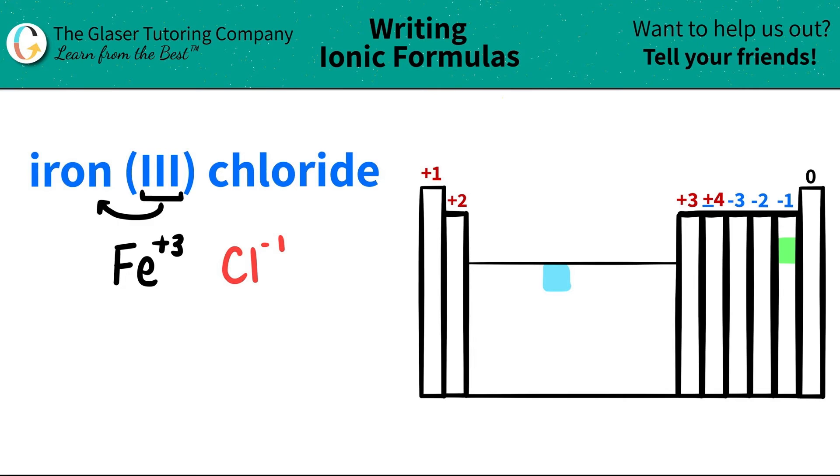Now all we got to do is we got to take these charges and crisscross them. That will tell me how many of each I need. So this plus 3 crisscrosses down to tell me that I need 3 chlorines. And this negative 1 crisscrosses down, telling me that I need only 1 iron. When you crisscross down, the charges vanish. You're just left with the actual number.